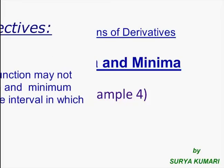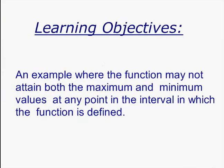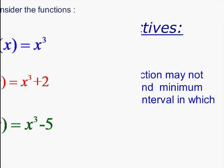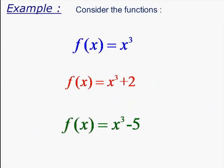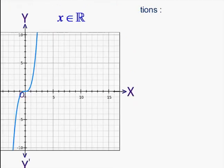In this lecture, we will discuss an example where the function may not attain both the maximum and minimum values at any point in the interval in which the function is defined. Consider the following functions: f(x) = x³, f(x) = x³ + 2, and f(x) = x³ − 5. Let us see the graphs for these functions.